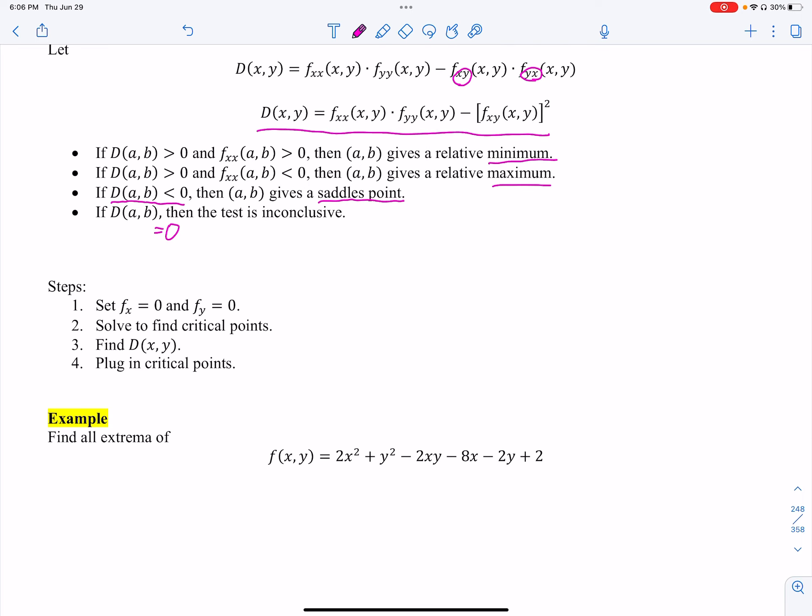So let's give this an example. The steps here is to find the partials and set them equal to zero. I'm just going to do that in a space right here. The partial of f with respect to x is going to be 4x minus 2y minus 8. The partial with respect to y, I got 2y minus 2x minus 2.